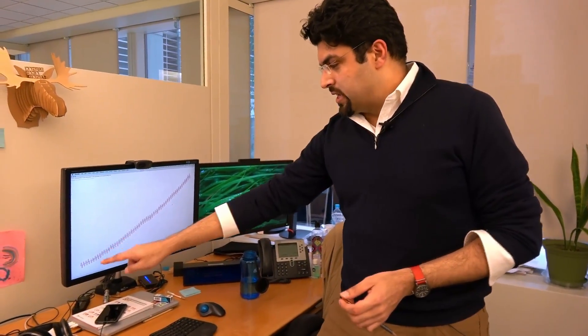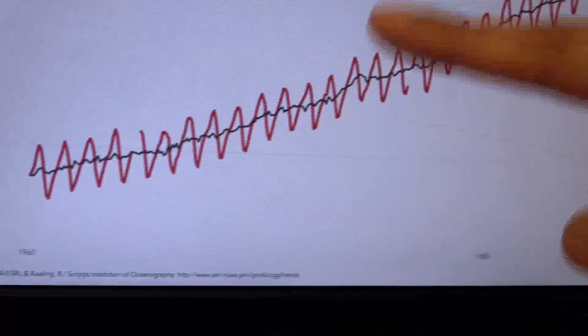But the interesting thing with this red line is that over the course of the year, it goes up and down. And the reason it goes up and down is because that's literally the earth breathing. So in the warmer months, trees suck carbon dioxide out of the atmosphere. So all the trees in the world are sucking in the CO2.